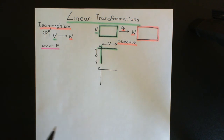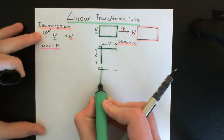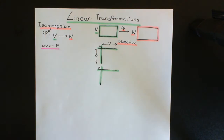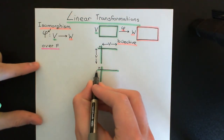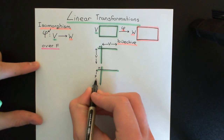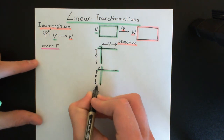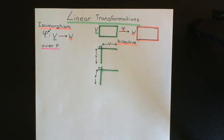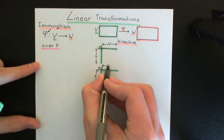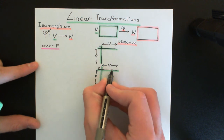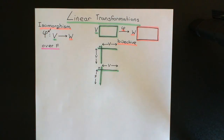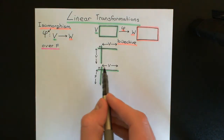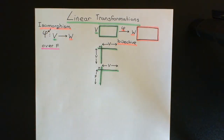We'll also have our scalar multiplication law, kept in green as well. This will involve all of the elements of the field capital F scalar multiplying elements of the vector space capital V. We'll give all of the elements of the field a dedicated row, and all the elements of the vector space a dedicated column. The entries in our scalar multiplication table define what any element of the field scalar multiplying any element of the vector space is equal to, and all the answers are back within the vector space capital V.